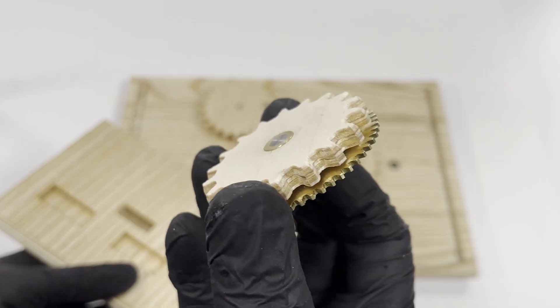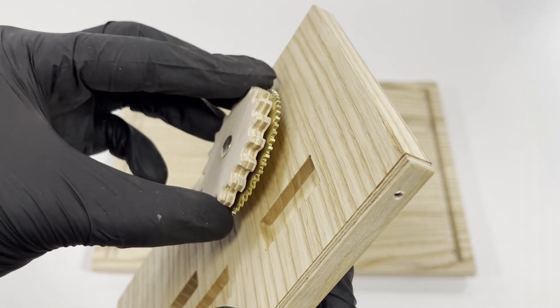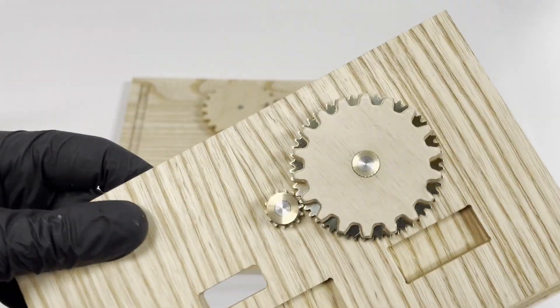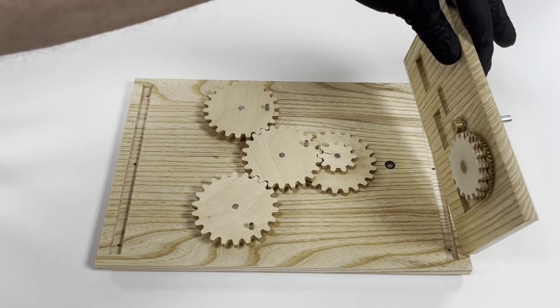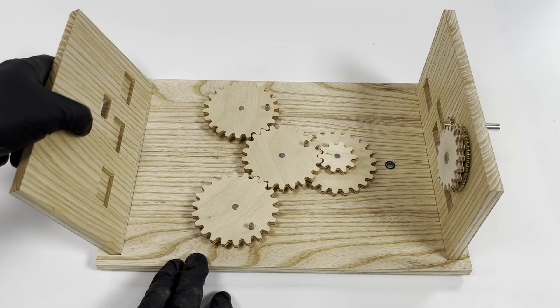The brass gearing was actually a last-minute addition. Once everything was assembled I realized the mechanism took more effort to turn than I liked. With so many gears running at once, the ratio just wasn't comfortable. I discovered that I had enough space to add a slim compound gear and that made a huge difference in how smoothly it operates.